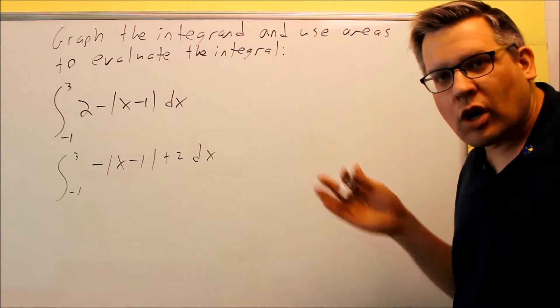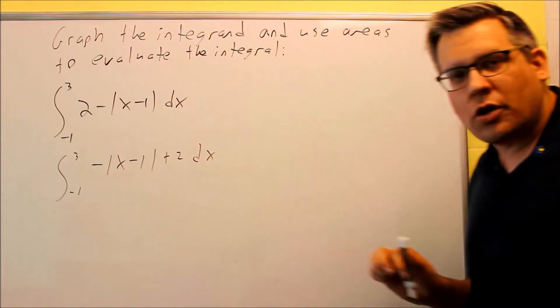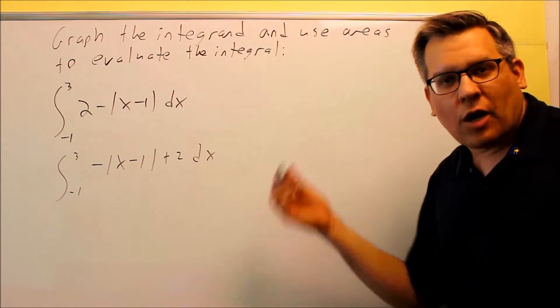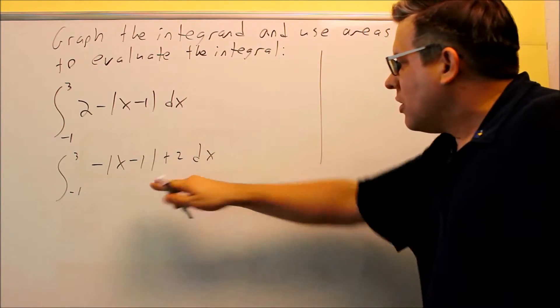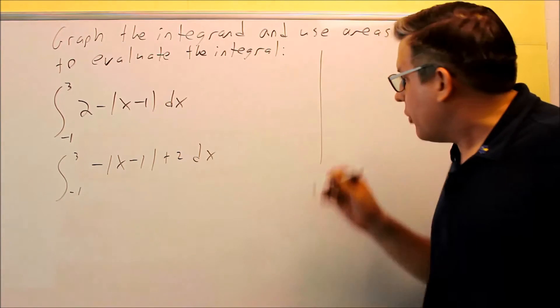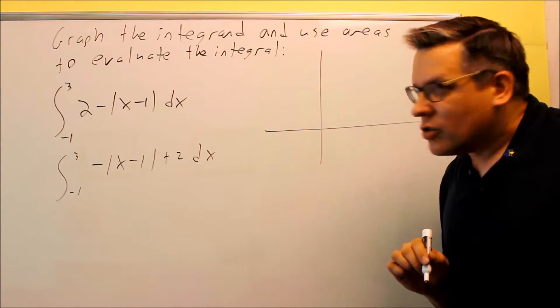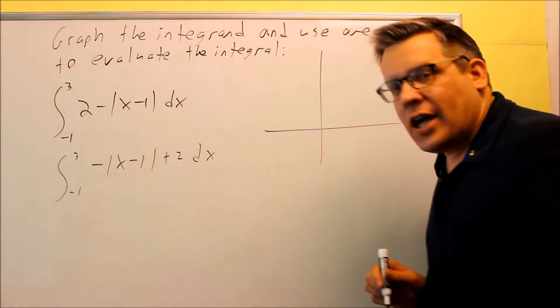So again, this is the reason why you want to learn transformations in pre-calculus for problems such as this one, where we can just make quick graphs without making tables. Now of course if you don't remember how it's graphed, you could always make a table and just put in numbers between negative 1 and 3. Or if you have a graphing calculator, you could also do that as well, but we'll do this one by hand.